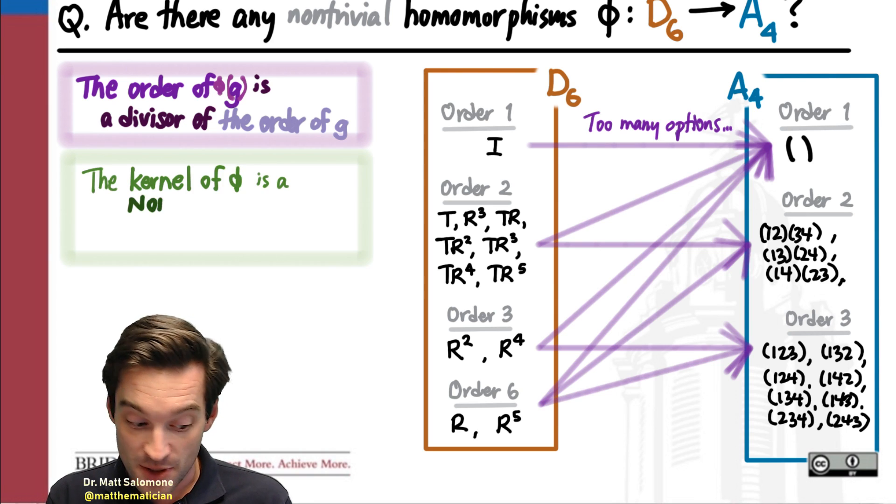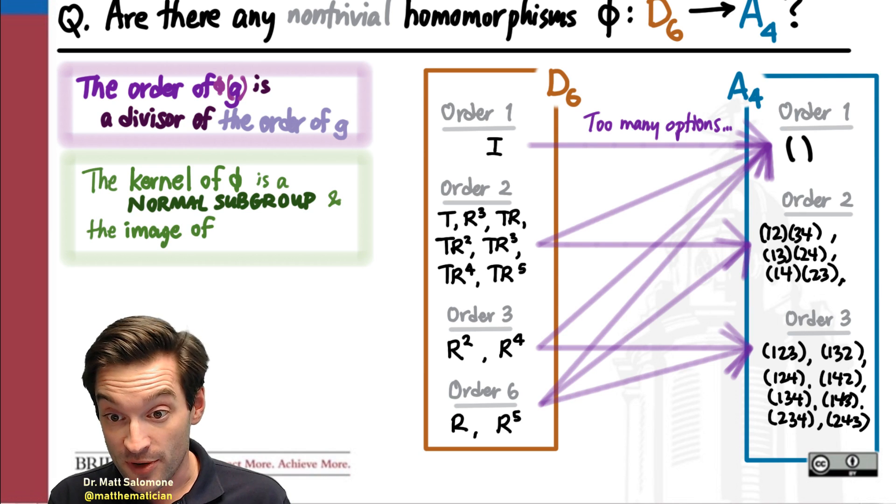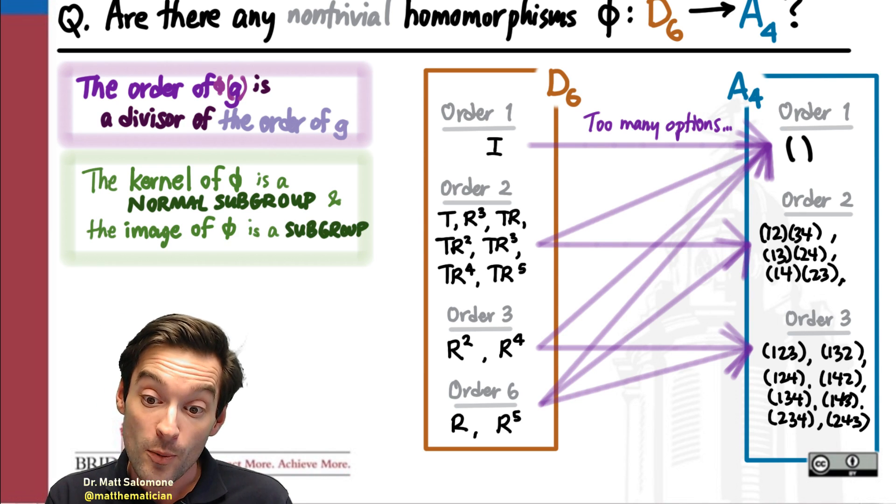or maybe we are just ending up sending all of these to the identity and getting a trivial example. So it's much more efficient, when we can get away with it, to think about how homomorphisms interact not with elements, but with subgroups.